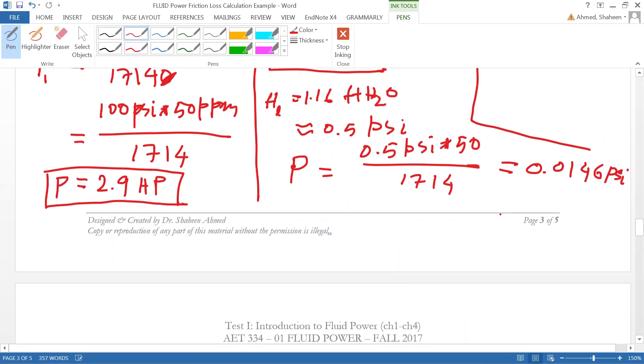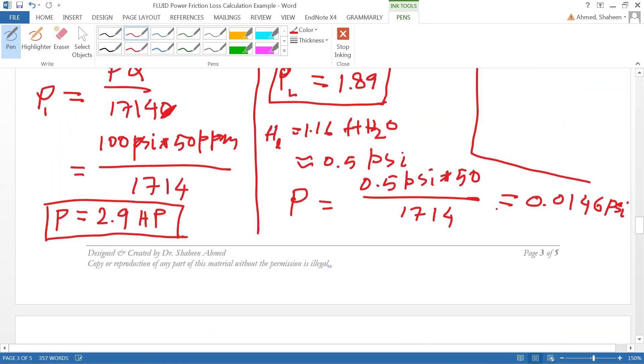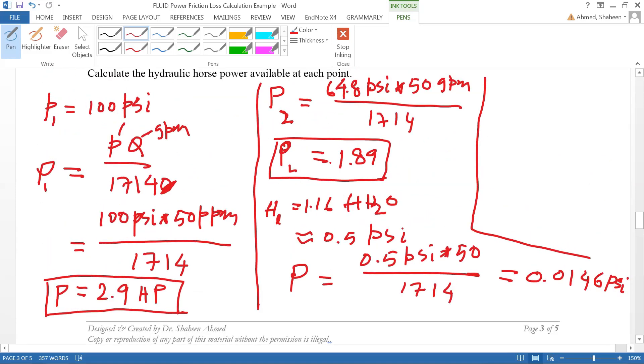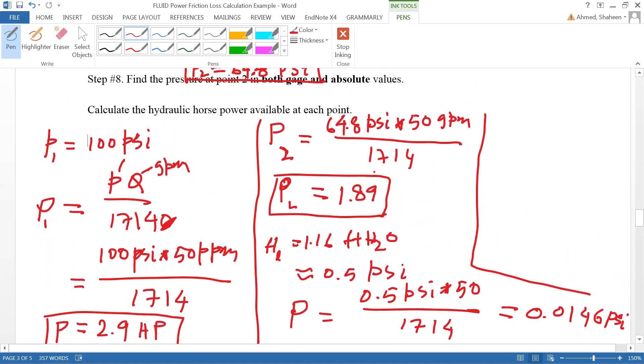So that's how this power at point 2, hydraulic power 1.89 horsepower, almost half of 2.9, basically because of that elevation gain. Now if you really want to calculate the efficiency, then you shouldn't be using this power loss.